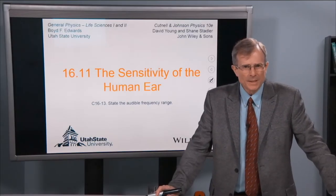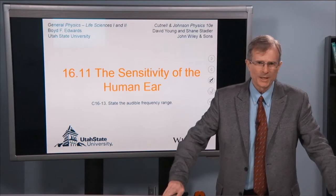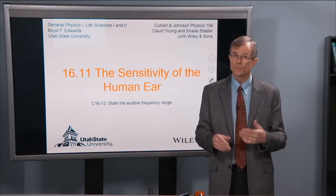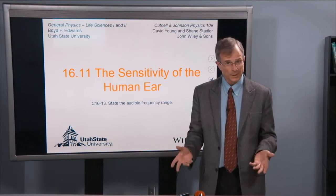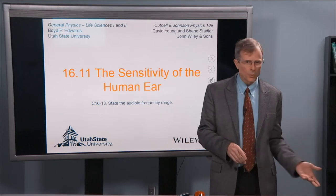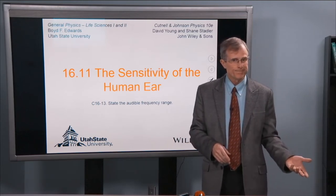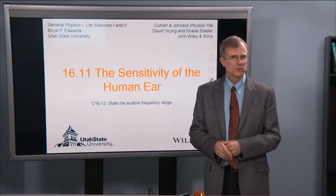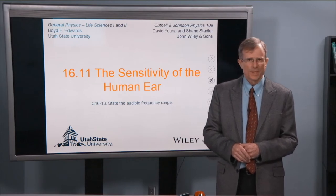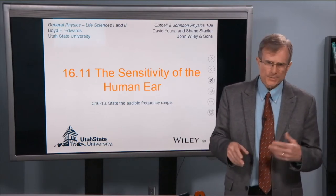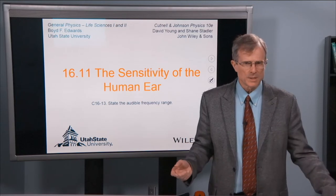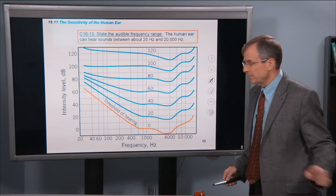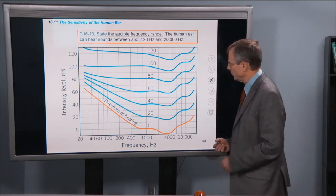Now we get to talk about the sensitivity of the human ear. We already talked about the amazing range of intensity levels that the ear can hear, all the way from 10 to the minus 12 watts per square meter, or 0 dB, all the way up to 1 watt per square meter, or 120 dB. So now we're going to ask about the sensitivity of the ear to different frequencies. What frequencies can the ear hear? And this diagram shows which ones it can hear.